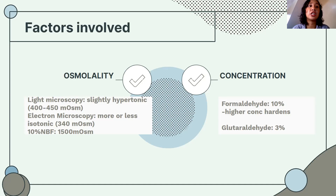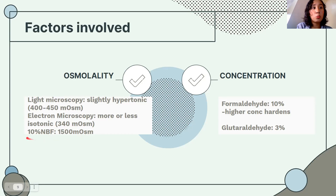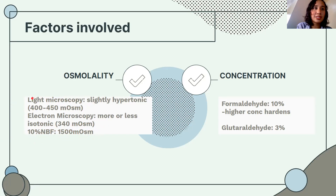In light microscopy, the fixative is slightly hypertonic at about 400 to 450 milliosmoles. However, 10% neutral buffered formalin — the most common general fixative — has an osmolality of 1,500 milliosmoles per kilogram, yet it still maintains the integrity of your cells. For electron microscopy, the value is about 340 milliosmoles — nearly isotonic.